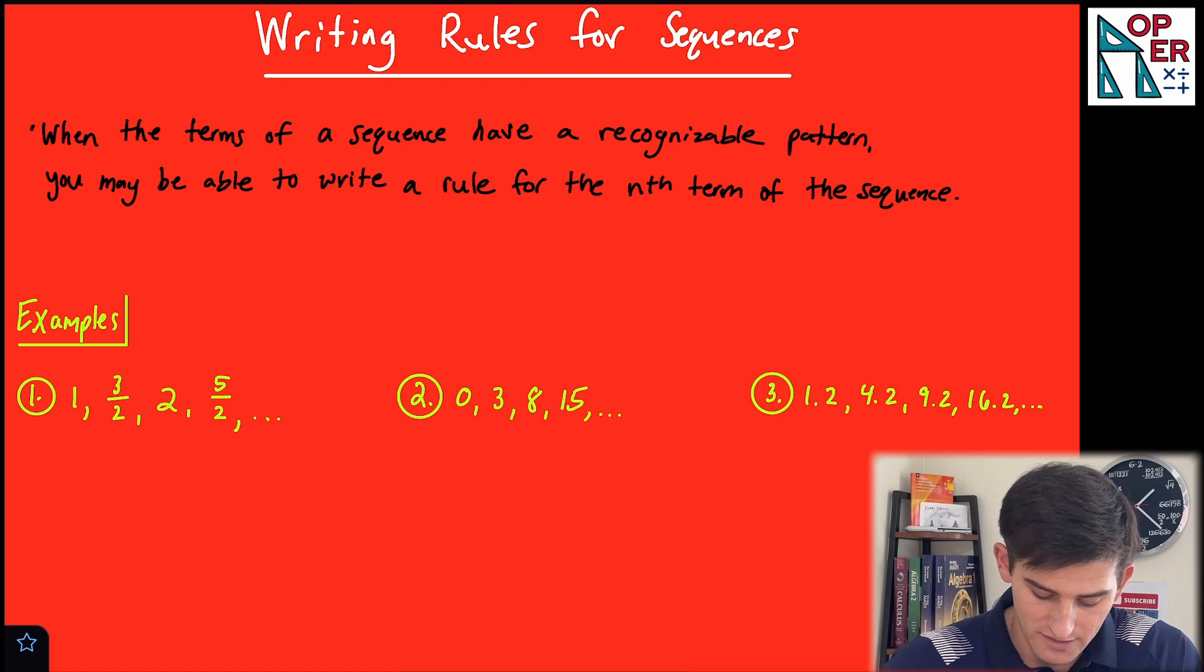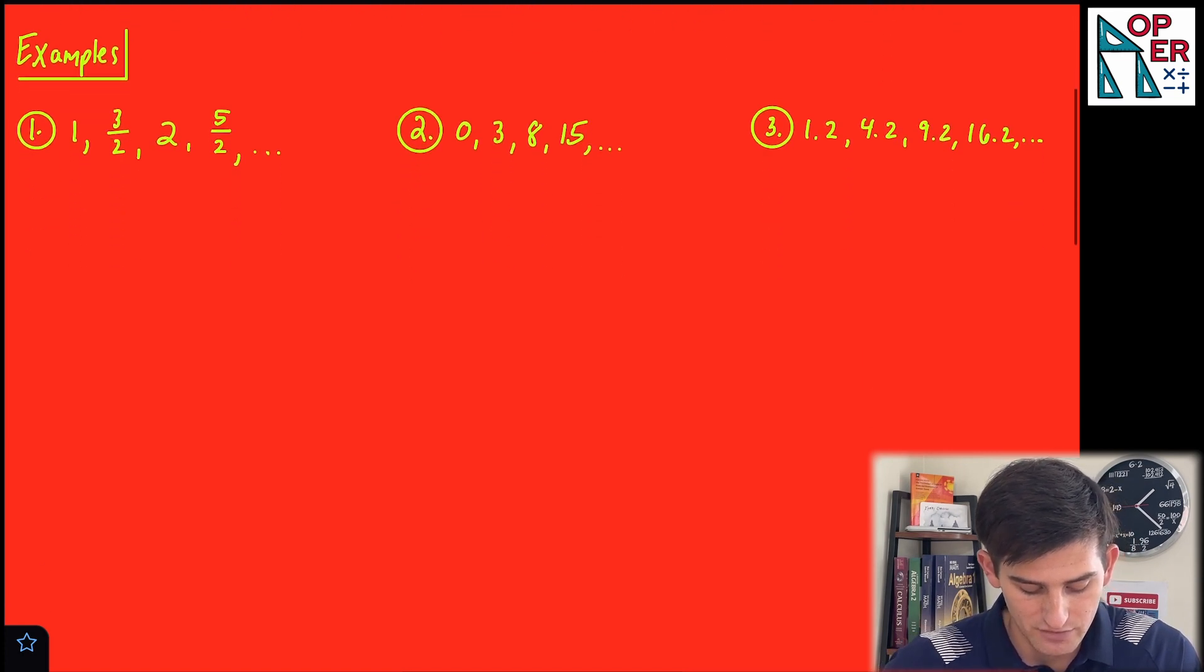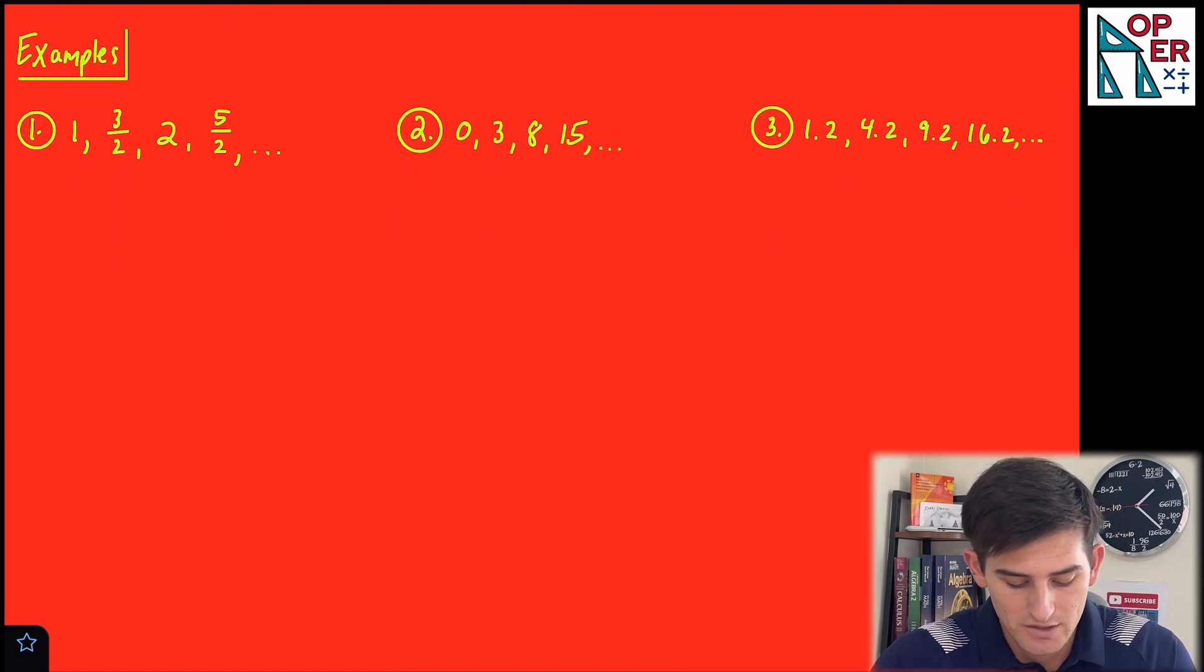So we're gonna jump down and do three examples here in this video. So let's start off with number one. So notice we have 1, three halves, three over two, 2, and then five over two.